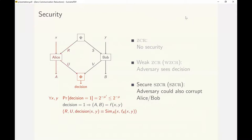In Strongly Secure ZCR, the adversary can also corrupt Alice or Bob. To ensure security against the corruption of Alice, the view of Alice must be simulable.